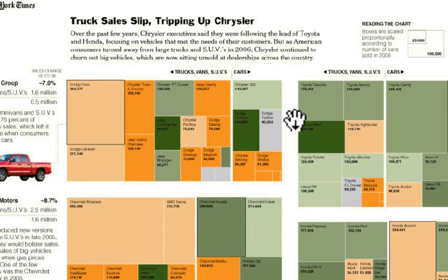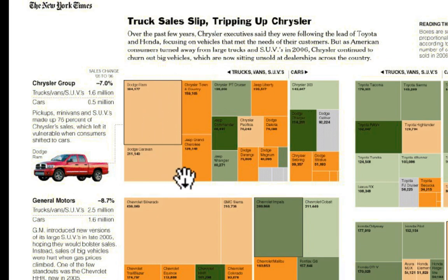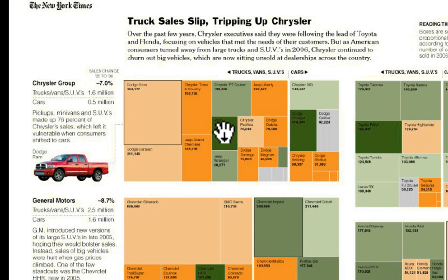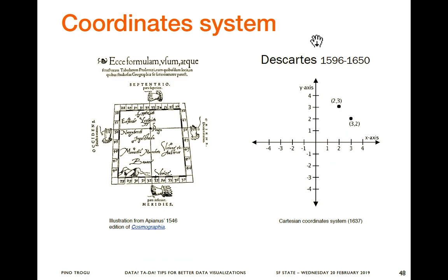This is from the worst point of the auto industry crisis, about ten years ago. It shows for Chrysler, models of trucks and cars, and how many they sold between 2006 and 2007. If they sold more in 2007, it's green; if less, it's red. The graph as a whole is nice because it shows just these four companies, the overall size, and then the size of each model and group — cars or trucks.